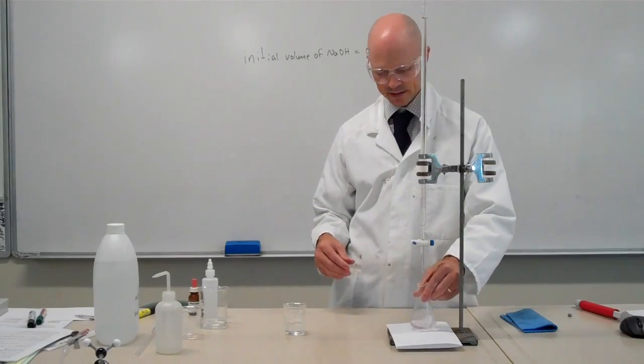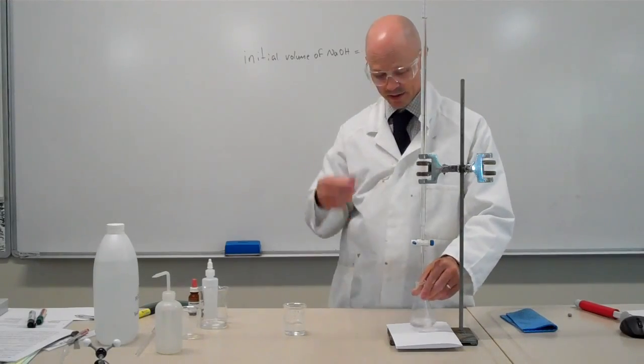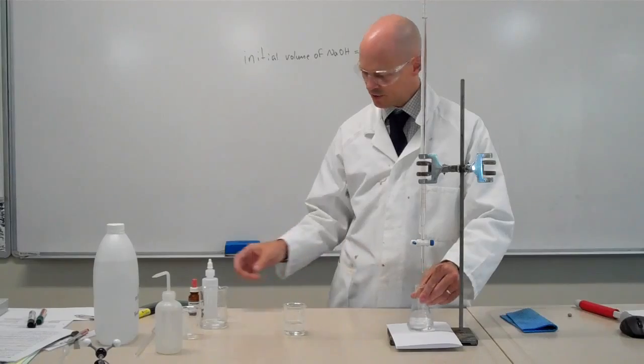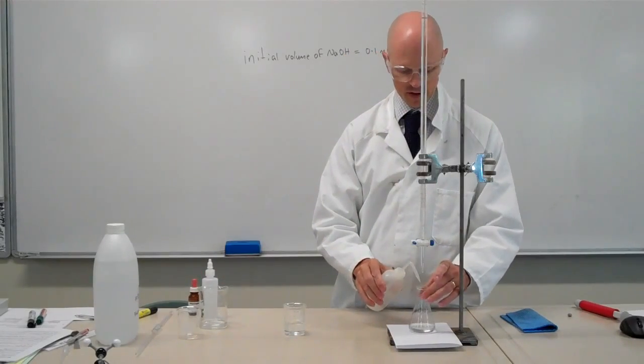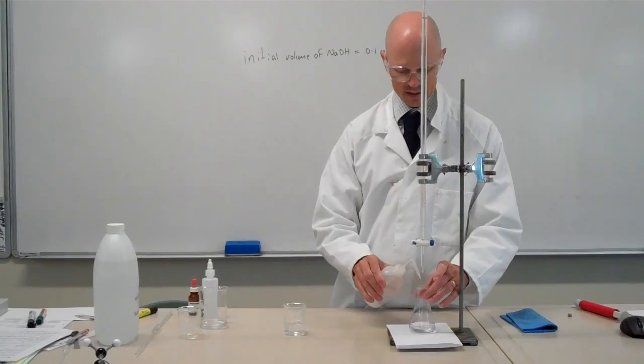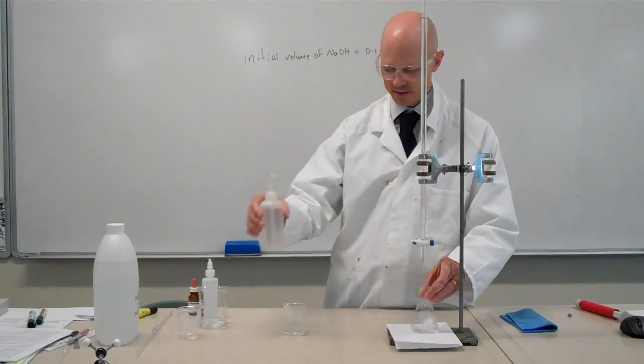The longer it takes for the pink colour to disappear, the closer you know you are to the end of the titration. I'm going to use a wash bottle to wash around the edges of my conical flask, just to wash down any splashed sodium hydroxide.